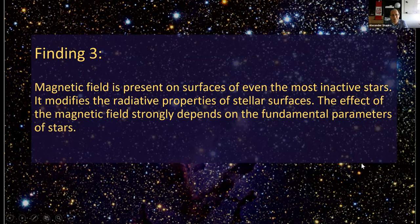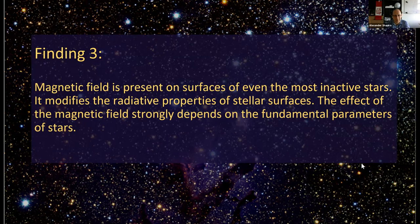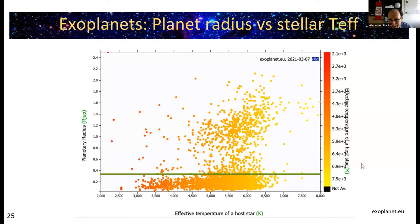The key finding is that magnetic field is present on surfaces of even the most inactive stars. Whether it originates from a small-scale dynamo or global dynamo, it affects properties of stellar surfaces, and importantly, the effect of the magnetic field strongly depends on the fundamental parameters of the stars.